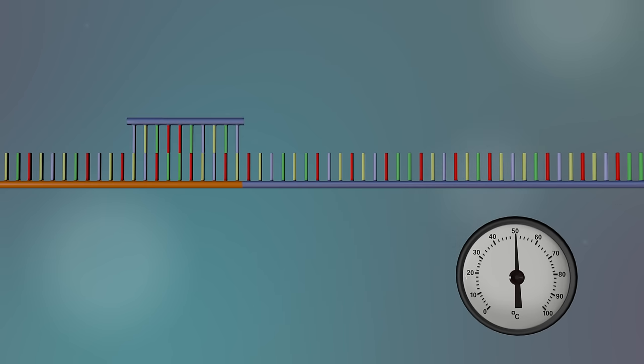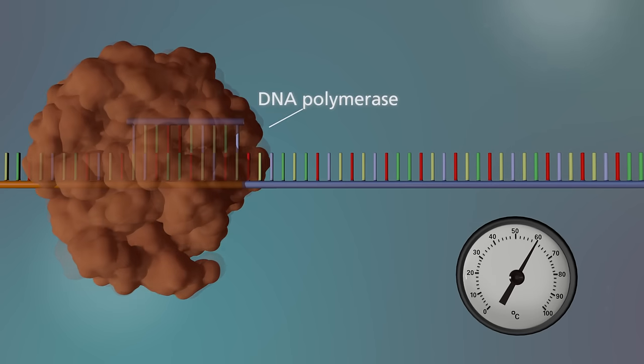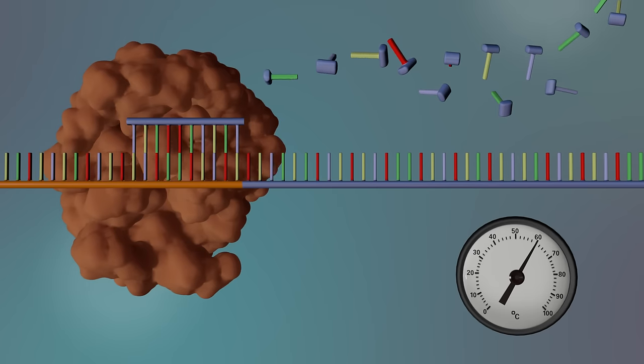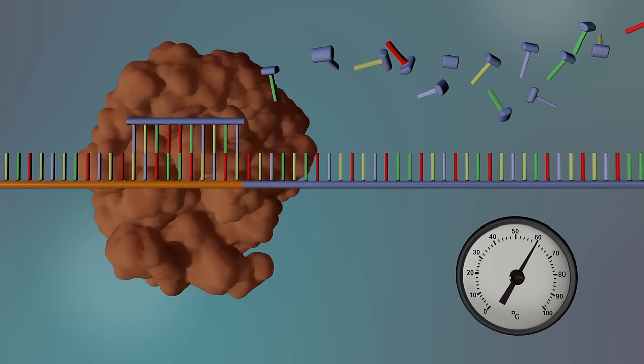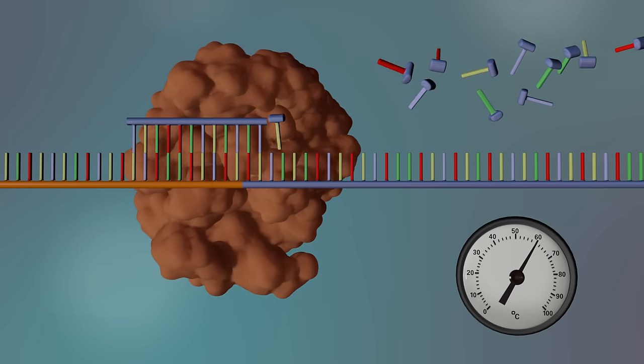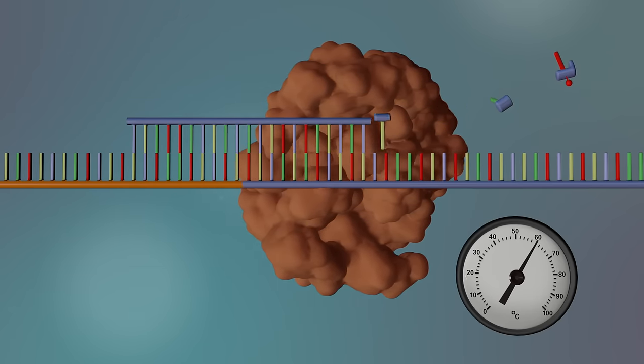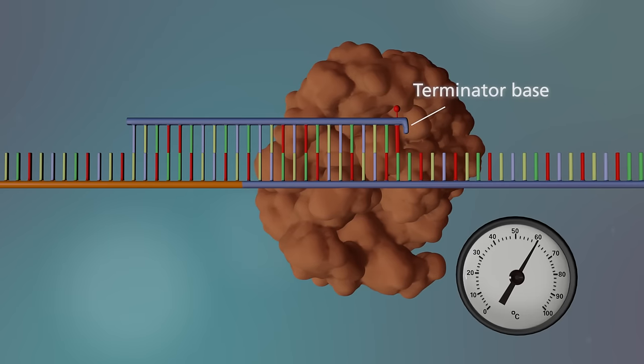The temperature is then increased to 60 degrees and the enzyme DNA polymerase binds to the primer DNA. DNA polymerase starts making a new strand of DNA by adding unlabeled DNA bases to the target DNA. It continues to add DNA bases until a terminator base is added.